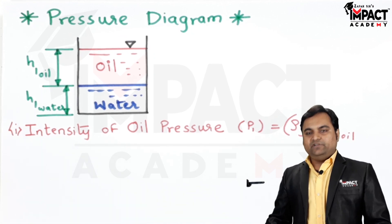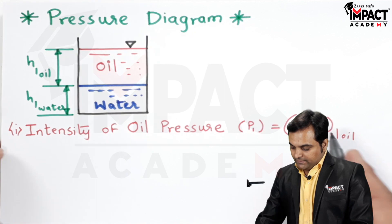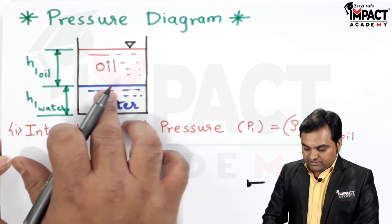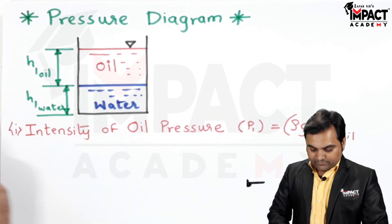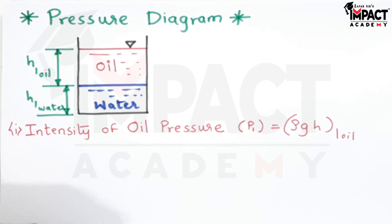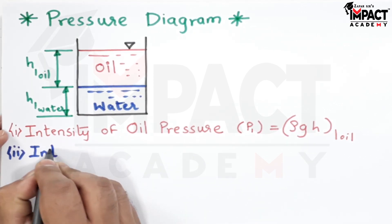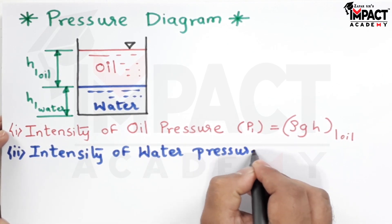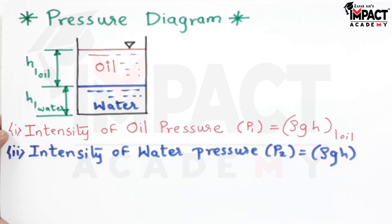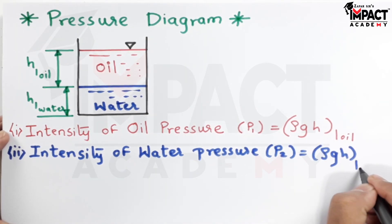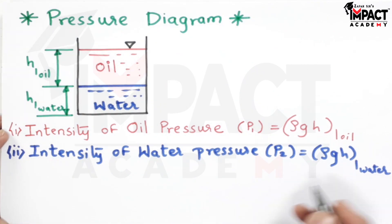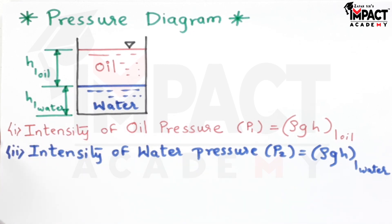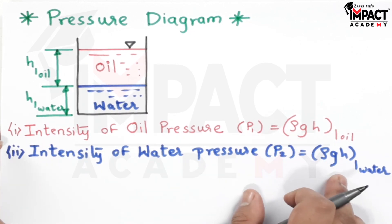Depending upon the specific gravity, the density of oil can be calculated, then h of oil is this height, so we can get the intensity of oil pressure which would be acting on this surface of water. Similarly, the intensity of water pressure would be ρgh of water, where the density of water is 1000 kg per meter cube, g is 9.81, and h is the height of the water column.